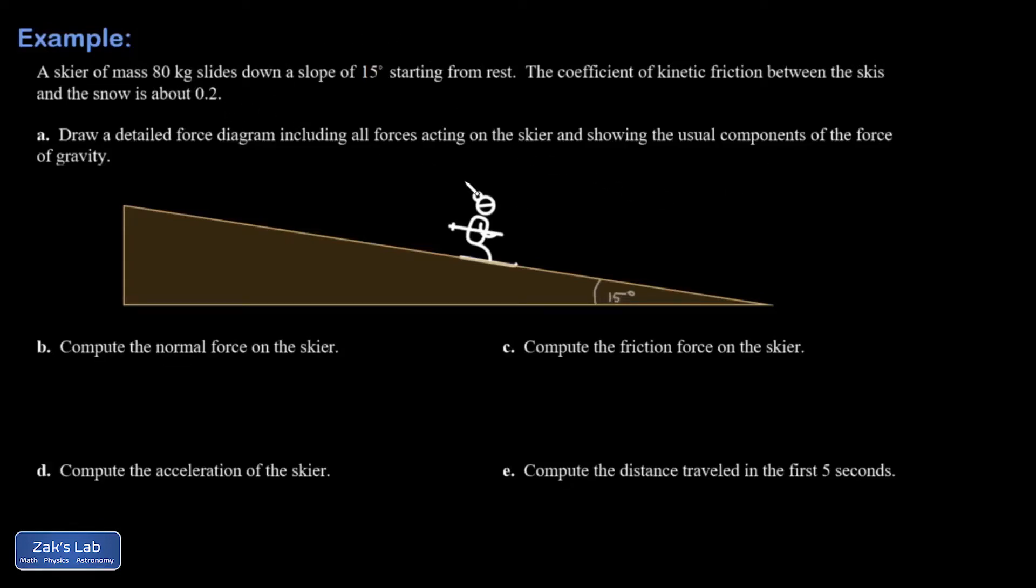On this problem, we're told that the mass is 80 kilograms. I'm going to write it all in the picture because I find it difficult to look at the paragraph. So I have 80 kilograms and then I have a coefficient of kinetic friction of 0.2. And I have my 15 degree angle here, so that's good.